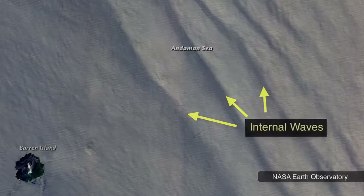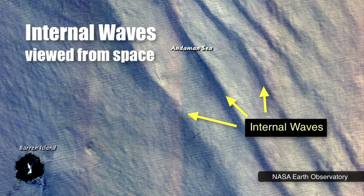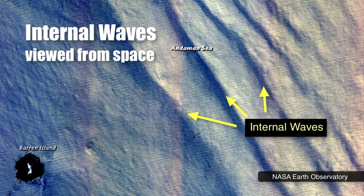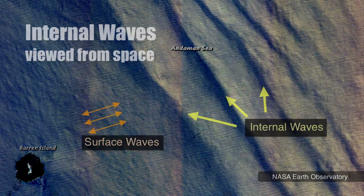Waves at depth can travel independently of those on the surface of the ocean. In other words, they can have different direction, speed, and wavelength as those on the surface.